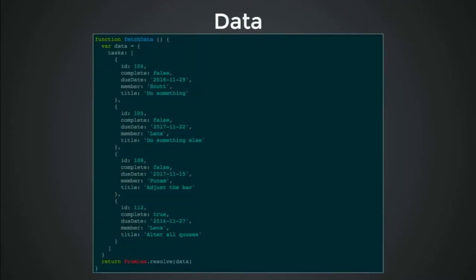Here's our data — don't try and memorize that. It's just a collection, an array with objects having properties: id, complete, member, title — all the things we need. I'm wrapping that in a promise so it's like an asynchronous communication. Who here has used promises before? Promises are a different way in JavaScript to do asynchronous code — normally you'd use a callback, but with promises you return a value which you can chain together. You'll see at least the chaining part and how it flattens out your code to make it more readable.